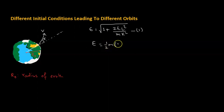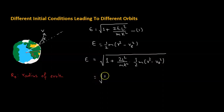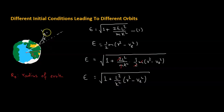We have the expression for energy: E = ½m(V² − V_e²). We substitute this into equation 1, so the eccentricity becomes ε = √(1 + (2L²/mK²)·½m(V² − V_e²)). After cancellation of terms, we are left with ε = √(1 + L²(V² − V_e²)/K²). Our task is to replace L and K with the values V, V_e, and α.